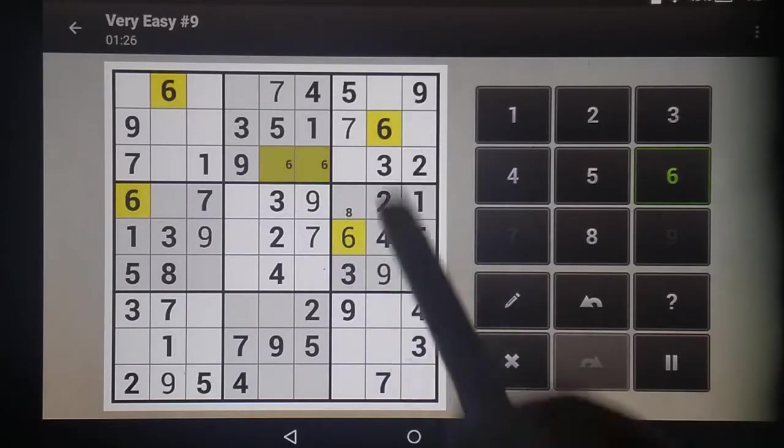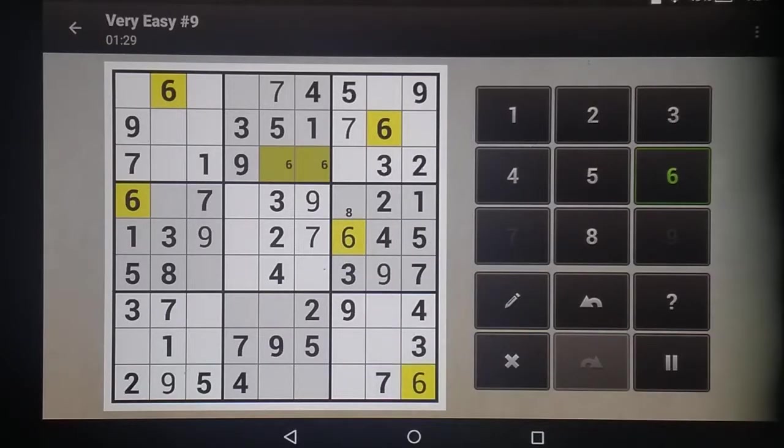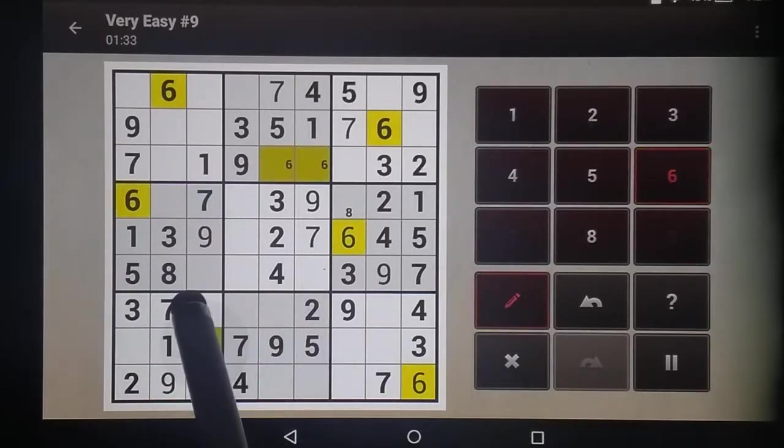These two 6s cover those two columns, so here's the 6 on that. These cover those columns, so this 6 has to be in one of those. Now, this 6 covers that row.